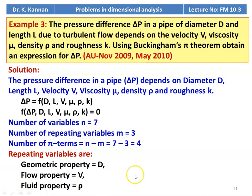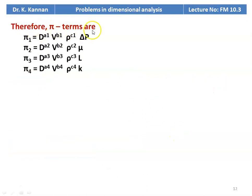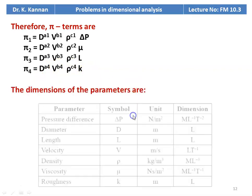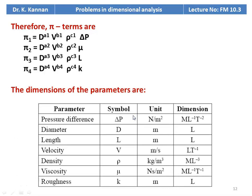The four pi terms are: pi1 = D^a1 · V^b1 · rho^c1 · ΔP; pi2 = D^a2 · V^b2 · rho^c2 · mu; pi3 = D^a3 · V^b3 · rho^c3 · L; pi4 = D^a4 · V^b4 · rho^c4 · k. Dimensions: ΔP is M L⁻¹ T⁻², D is L, L is L, V is L T⁻¹, rho is M L⁻³, mu is M L⁻¹ T⁻¹, k is L.